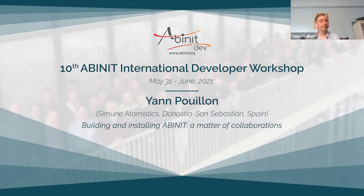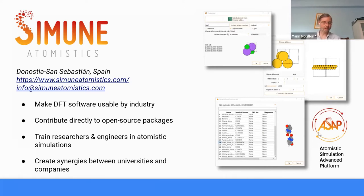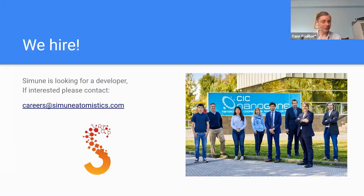For those who don't know, I'm now working at Simune Atomistics, which is a company making DFT software available to industry. We contribute as much as we can to open source packages, participate in the training of researchers and engineers in atomistic simulations, and create synergy between universities and companies. One of the tools Simune is developing is ASAP — the Atomistic Simulation Advanced Platform — which uses different DFT codes and makes them more friendly to industry. We are hiring; if you're interested, contact us at careers@simuneatomistics.com.